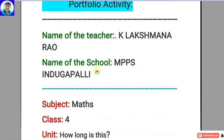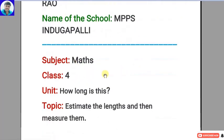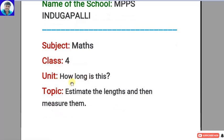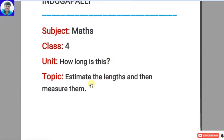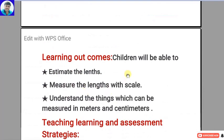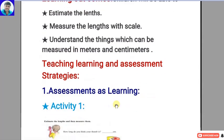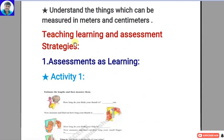First, you have to write the name of the teacher, name of the school, subject — maths, class 4. The unit I selected is 'How Long Is This' — the topic: estimate the lengths and then measure them. Learning outcomes: children will be able to estimate lengths, measure lengths with a scale, and understand things which can be measured in meters and centimeters.